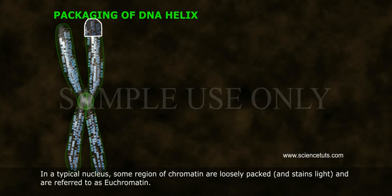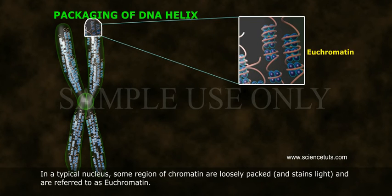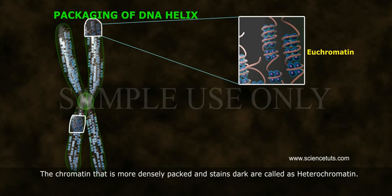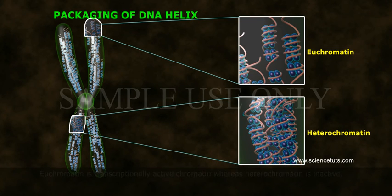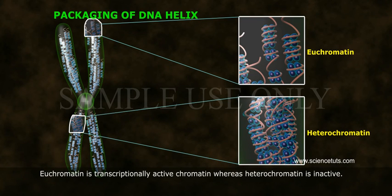In a typical nucleus, some regions of chromatin are loosely packed and stain light; these are referred to as euchromatin. Chromatin that is more densely packed and stains dark is called heterochromatin. Euchromatin is transcriptionally active chromatin, whereas heterochromatin is inactive.